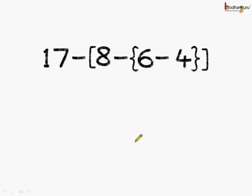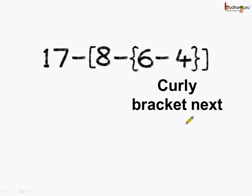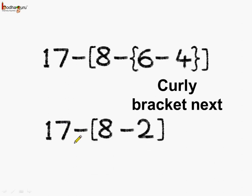Solving that gives us 4. So we get: 17 minus square bracket [ 8 minus curly bracket { 6 minus 4 } ] closing square bracket. Next, we solve the curly bracket: 6 minus 4 equals 2. So we get 17 minus [ 8 minus 2 ].